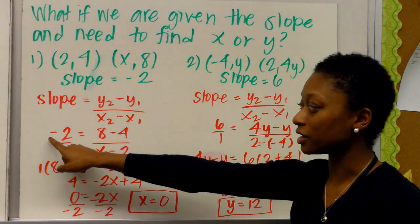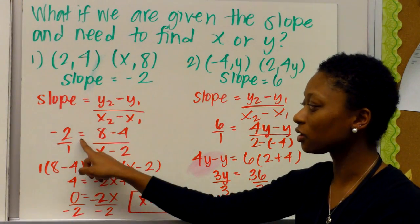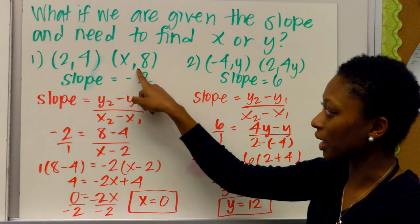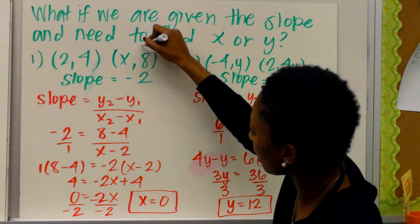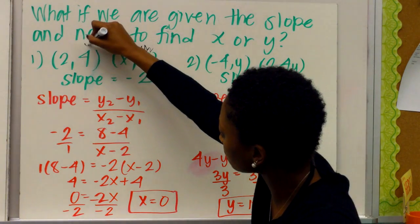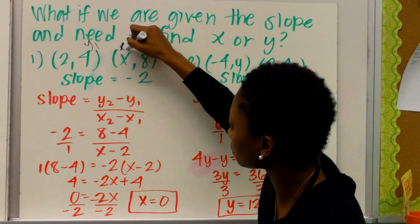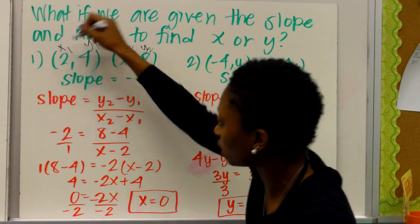y2 minus y1 over x2 minus x1. So that means our negative 2, that's our slope, equals y2. So I chose to do 8 minus 4. So that makes this my y2, and this my y1. That makes this my x2, and this my x1.